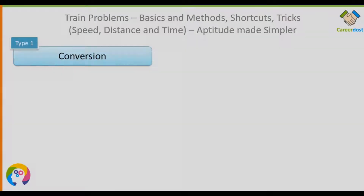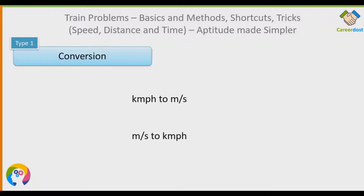The first type is Conversion. You might have faced these problems in many exams. There are two types of conversion: one is kilometer per hour to meter per second, and the other is meter per second to kilometer per hour. To convert km/h to m/s, multiply by 5/18. To convert m/s to km/h, multiply by 18/5.